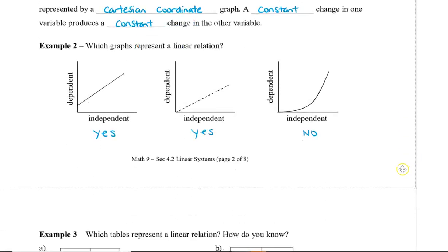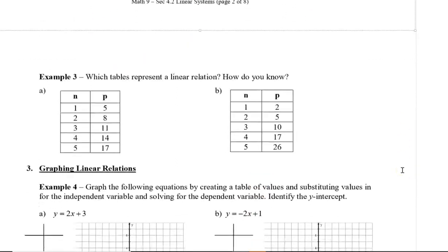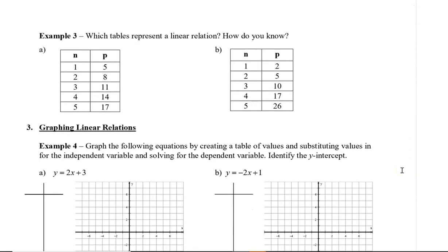We've looked at some graphical examples, so now let's look at some examples in a table. In the first example, the n values go up by 1: 1, 2, 3, 4, 5. The p values increase by 3 each time — from 3 to 6 is 3, 6 to 9 is 3, 9 to 12 — wait, 11 to 14 is 3, and 14 to 17 is also 3. So this first example is a linear relation because the difference is always constant.